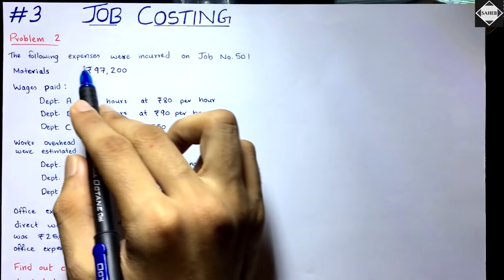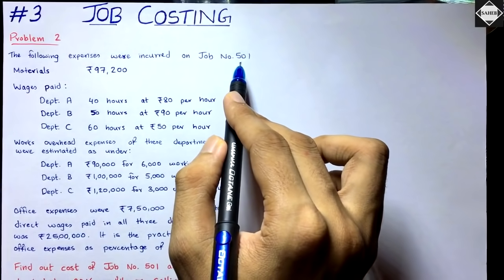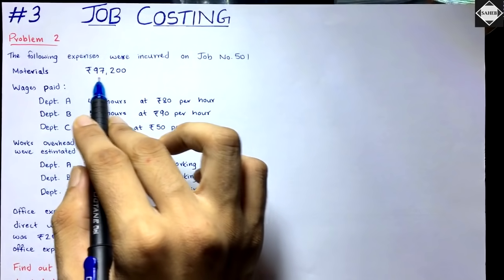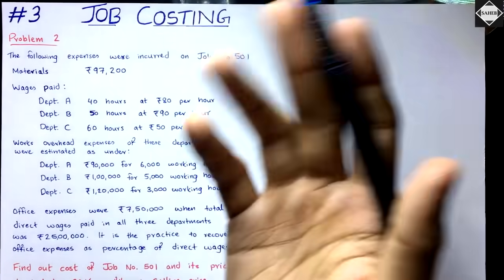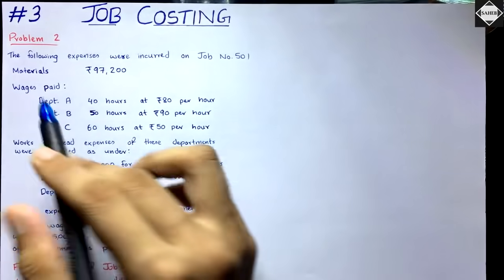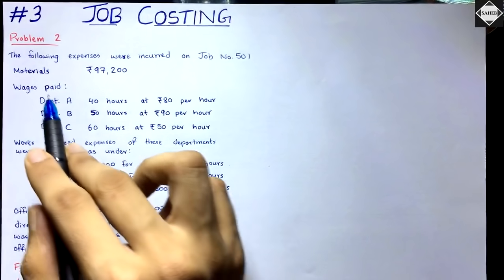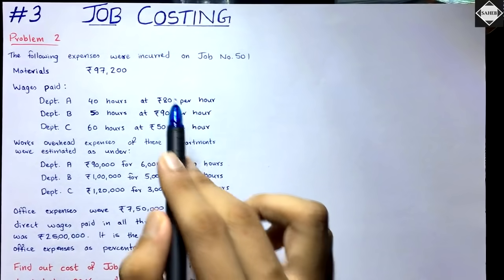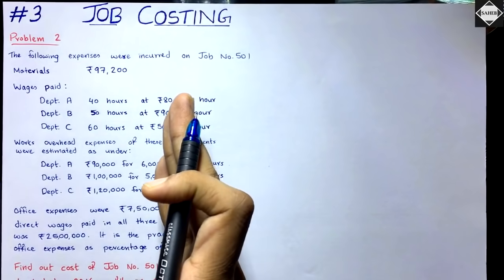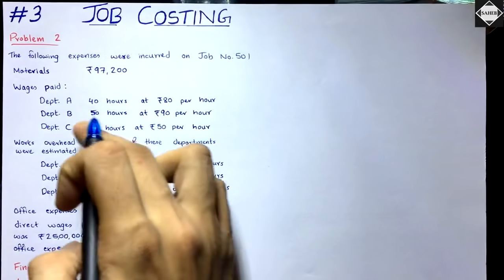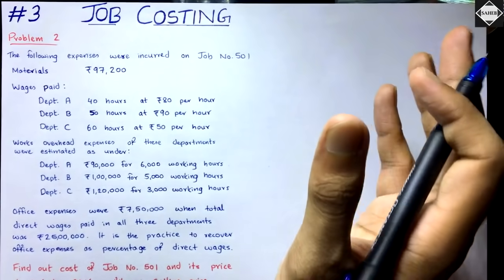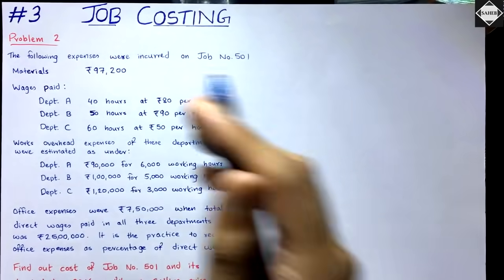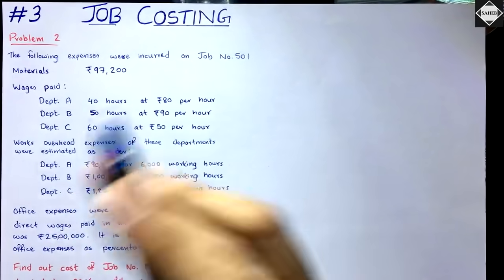The following expenses were incurred on job number 501. Materials: ₹97,200 — these are the direct materials, we take that as it is. Then we have direct wages: department A, 40 hours at ₹80 per hour. These hours are for this job only, so we're going to multiply 40 hours into ₹80. Department B and C — same thing.